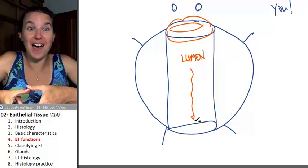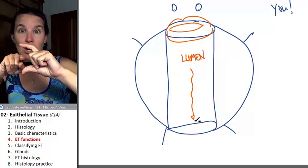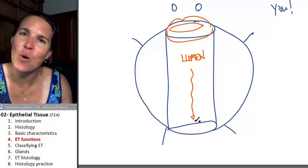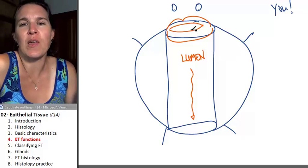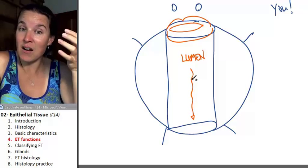Like if you had a donut, the donut analogy. If you had a donut and I stuck my finger in the hole of the donut, am I really inside the donut? Not so much. However you want to think about that. This lumen is actually outside of the body.